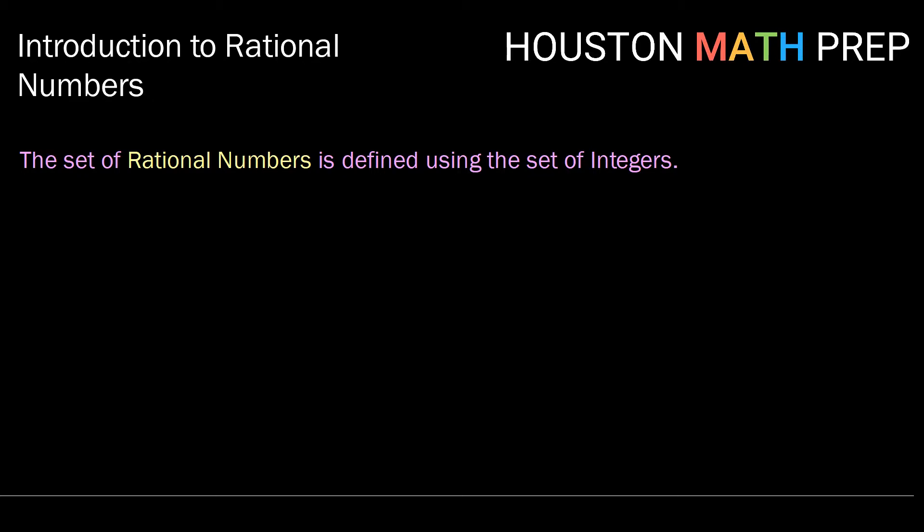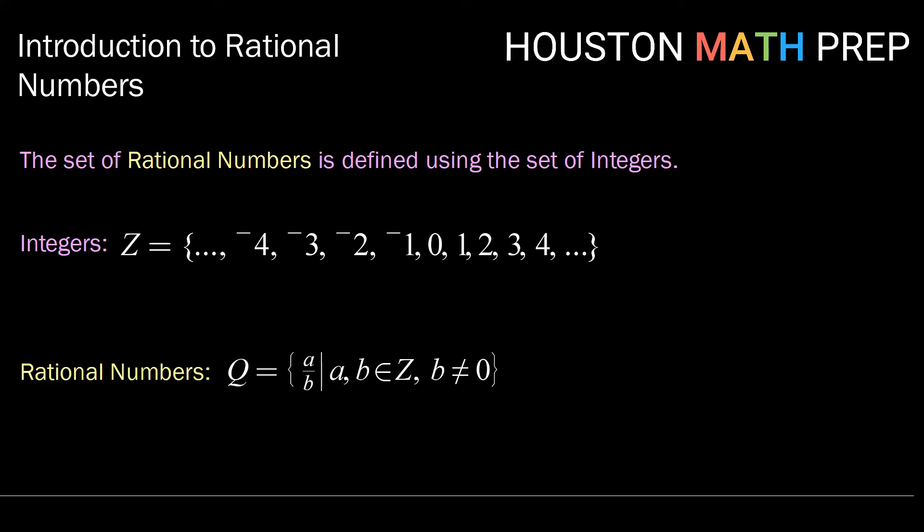The set of rational numbers is defined actually using the set of integers which we've talked about before. So remember, the integers were the set notated with a Z of all the positive and negative whole numbers. The rational numbers are usually denoted with a Q and they are any number that can be written as A over B,